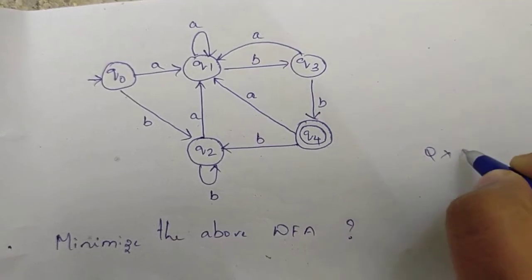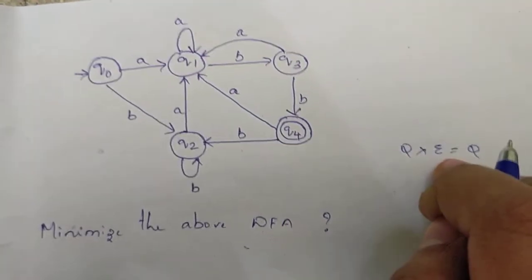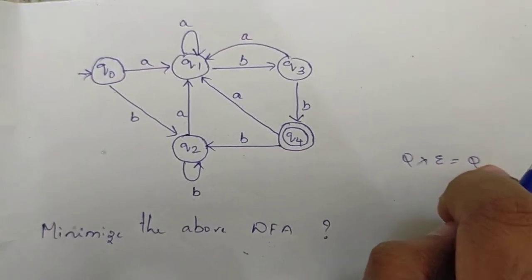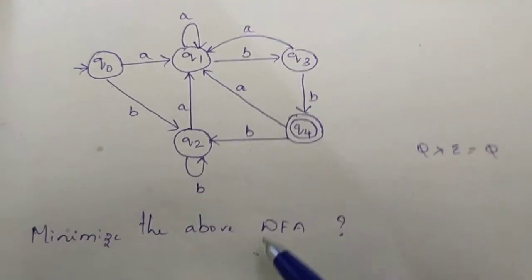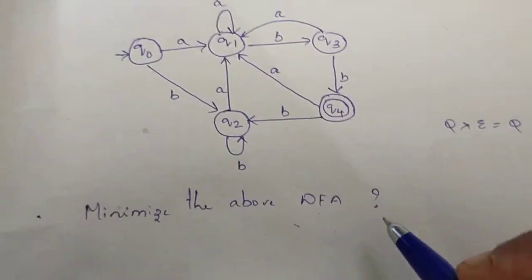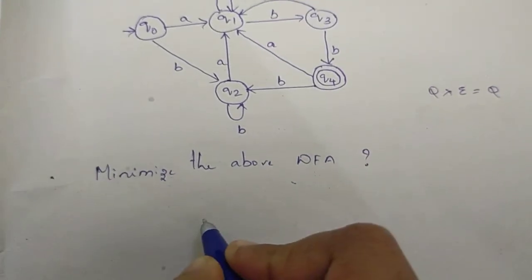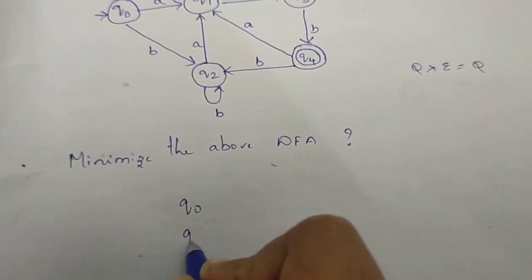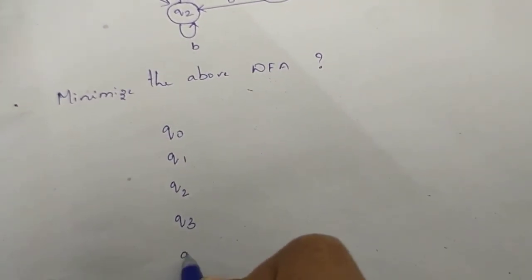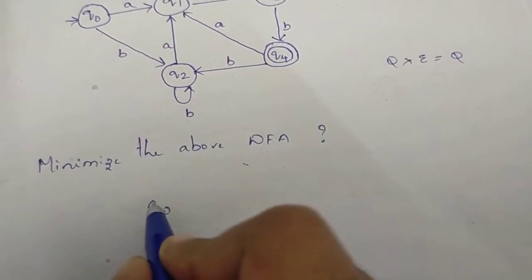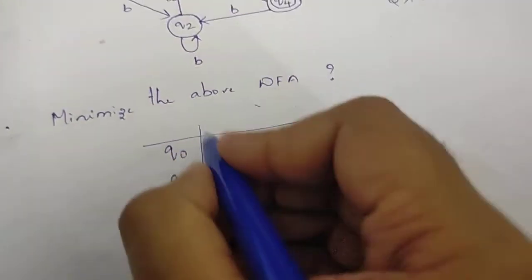Here is the DFA. The DFA is defined as Q cross Sigma going to Q. We will construct the transition table for this DFA, which shows the states and input symbols.